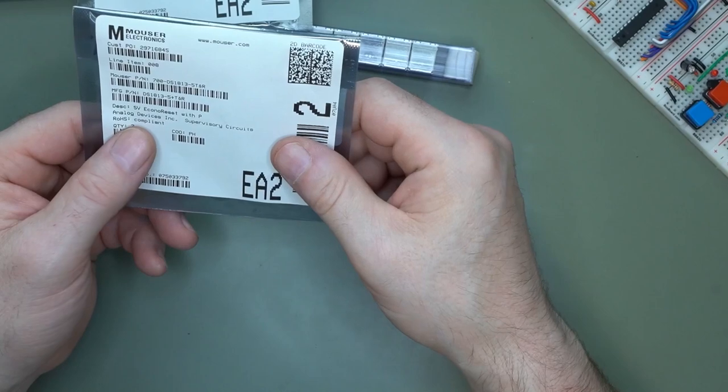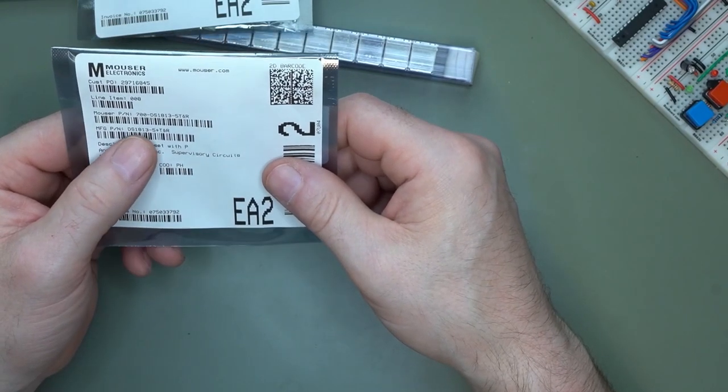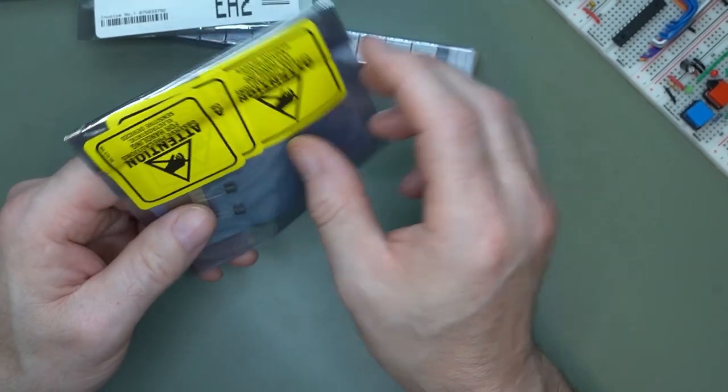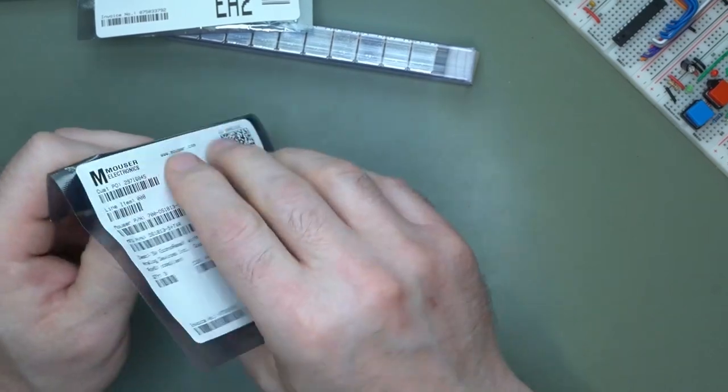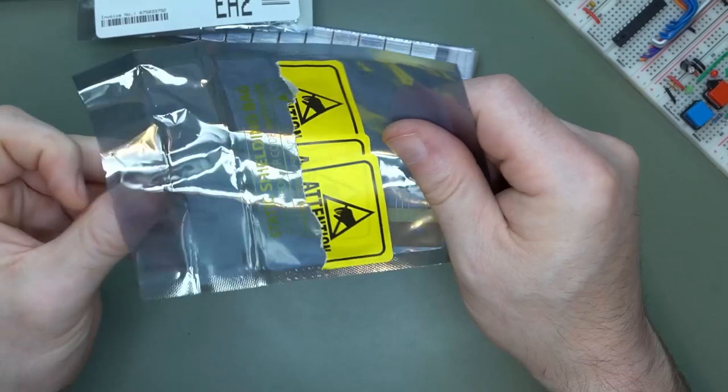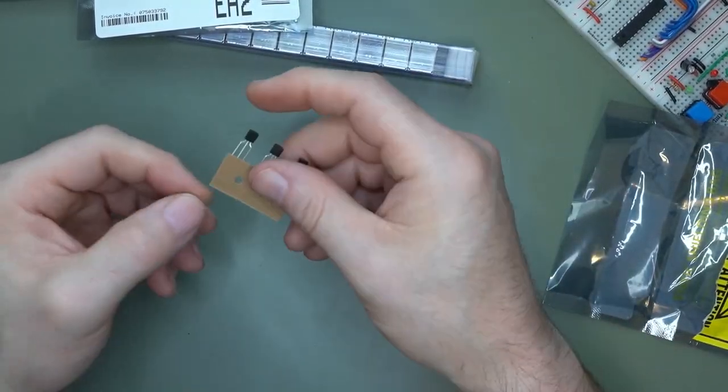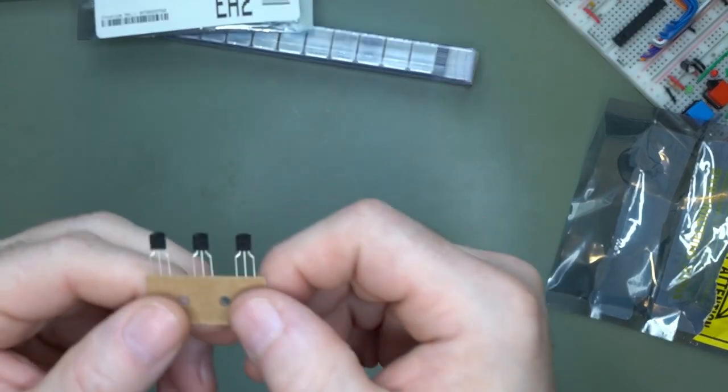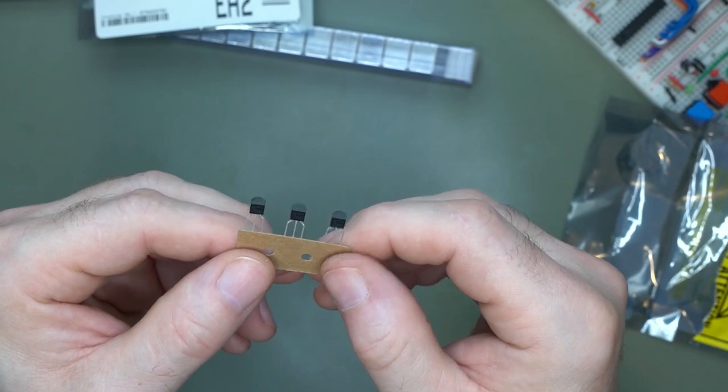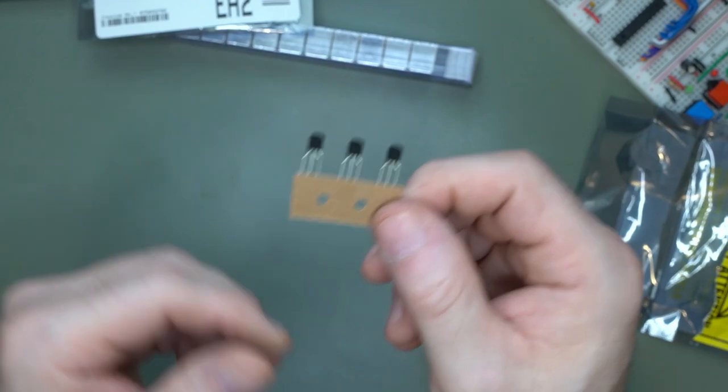Next on the list, Econo Reset, the DS-1813-5. This is what I use for my Reset circuits. Very interesting little device. It does a debounce, it's open collector. I just like these ones. Perfect. I mean, unless you have specific demands for a watchdog. If you don't need a watchdog, that's the part you need.